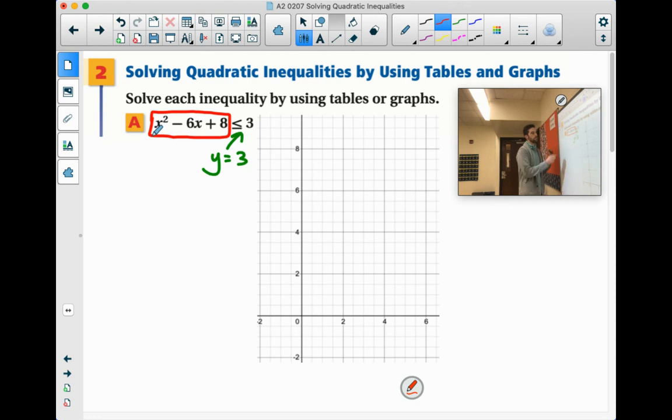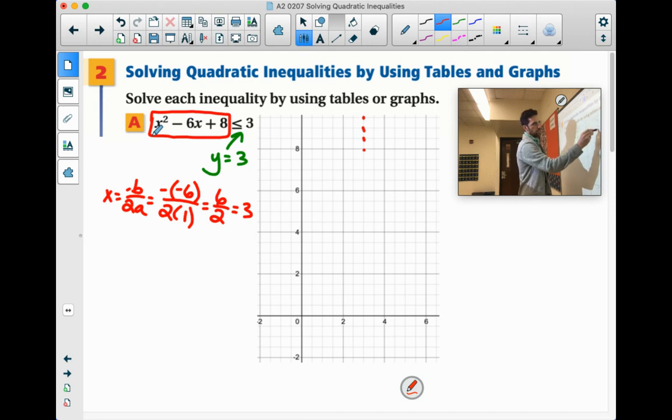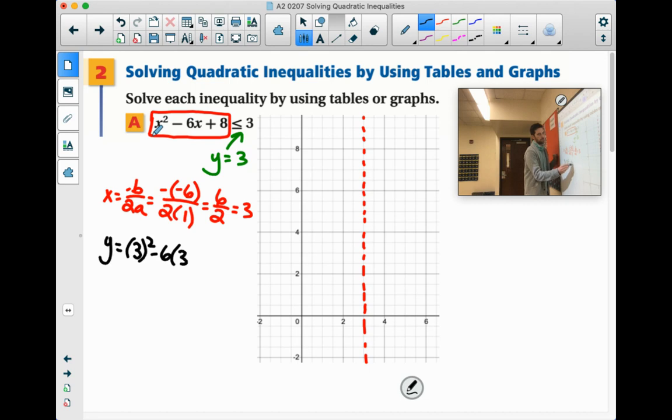But the first part, if we were looking for our axis of symmetry, our negative b over 2a, we'd have negative negative 6 over 2 times 1, which gives us 6 over 2, which is 3. So at 3, we're going to divide this graph right down the middle, this parabola. So again, immediately when you find that, you substitute it in for x.